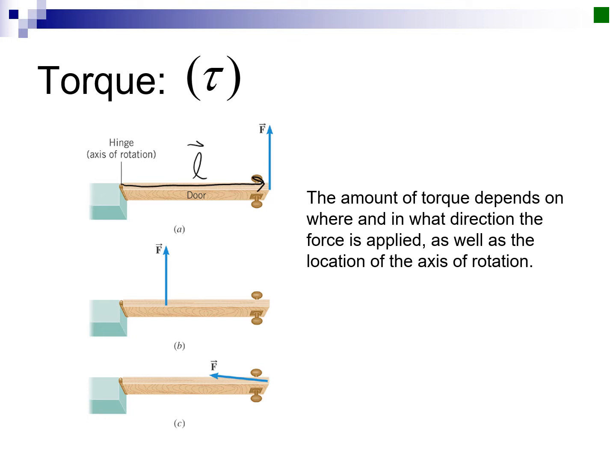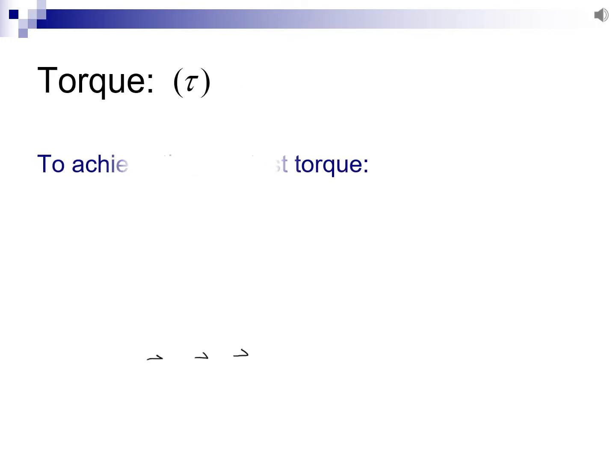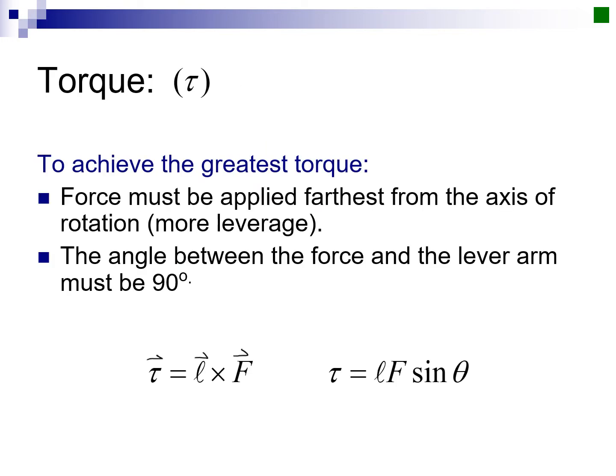To turn something, you need to apply a force with leverage, which is called a torque. Our force in this case is applied straight up, and the leverage is the distance between the axis of rotation and the application point of the force. Both force and leverage are vector quantities. To get the largest torque for your force, you must apply your force farthest from the axis of rotation—that will give you the most leverage—and also you need to apply your force with a 90-degree angle to the lever arm.